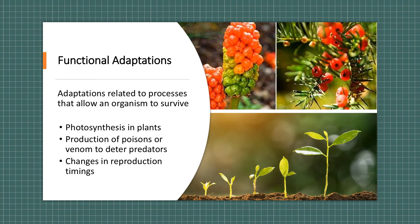The third type of adaptation is functional adaptation, which are adaptations related to processes that allow an organism to survive. A key one for plants is photosynthesis, which is a process that allows growth. Another is production of poisons or venom to deter predators. Well plants don't produce venom but they will produce poisons.